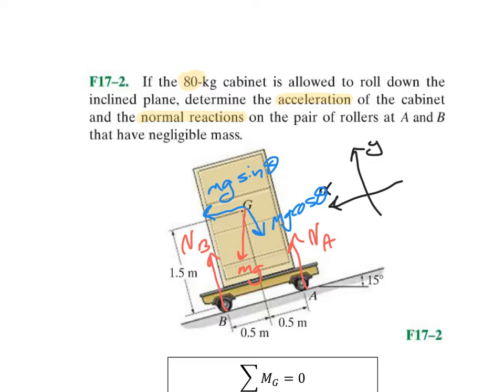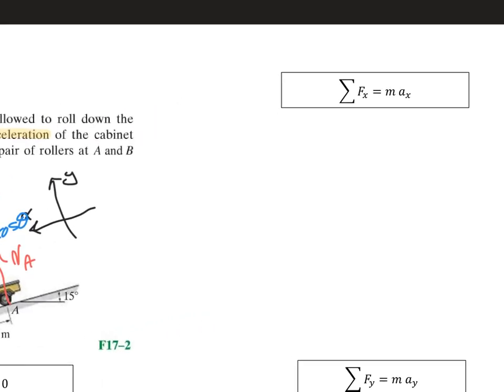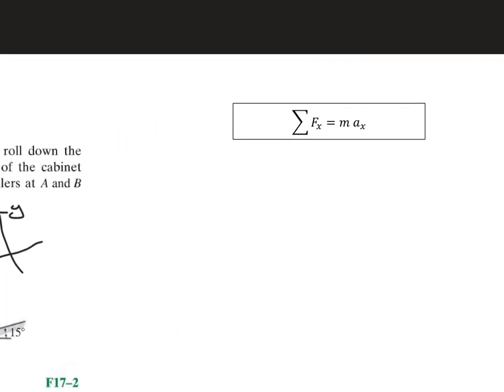So now we go ahead and we take a look at our other equations that we have. So we've got our F equals M A, and remember that down the slope is what we call positive X. So in that direction, we had M G sine theta, and that has to be equal to M A.